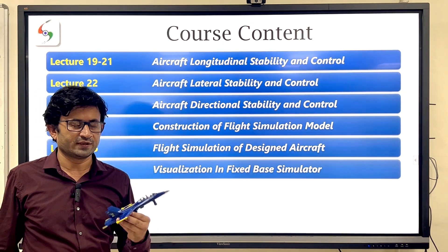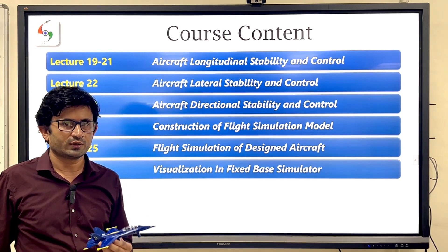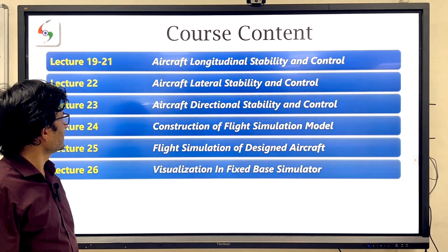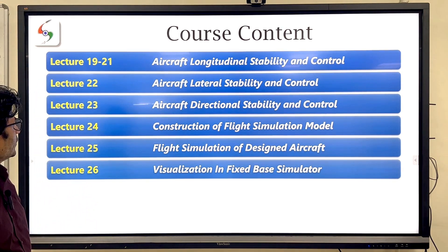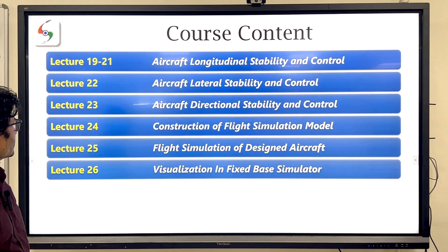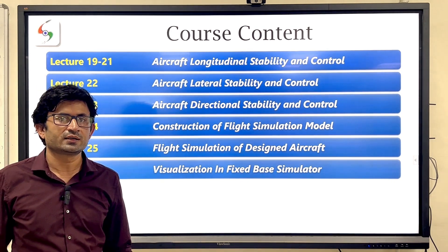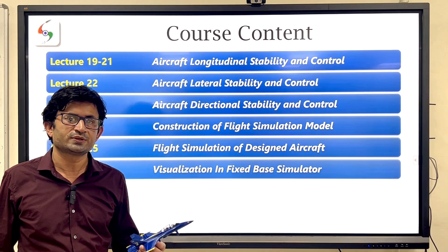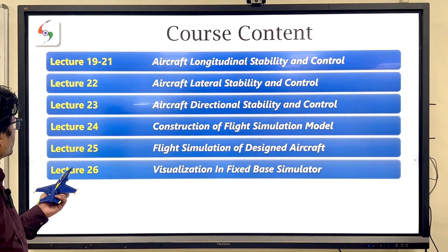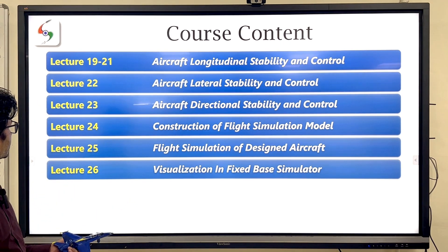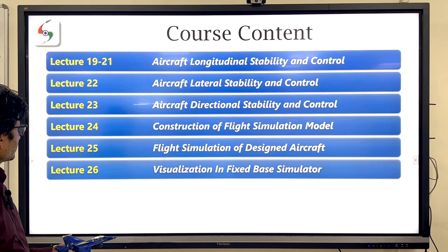We will cover how the aircraft will behave in the longitudinal plane — what the longitudinal plane is, that also we will cover in the upcoming lectures. In lecture 22, we will deal with aircraft lateral stability and control, because an aircraft can be stable or unstable in all three directions: roll, pitch, and yaw. In lecture 23, we will cover directional stability and control.